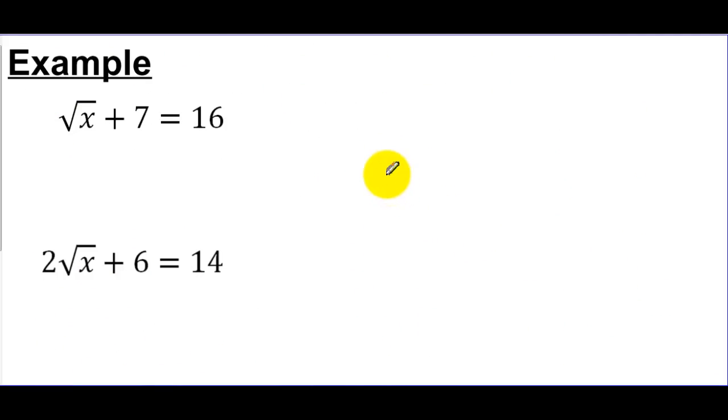Alright, so let's apply that idea about isolating the function to radical expressions. So if you take a look here, I have √x + 7 = 16. So again, if we're applying that same idea, I'd say the square root of x is the function. And all this other stuff is just on the outside of that function. So I want to get rid of, in this case, the plus 7 by doing minus 7 on both sides. And I'll get the square root of x is equal to 16 minus 7, and that'll be 9.